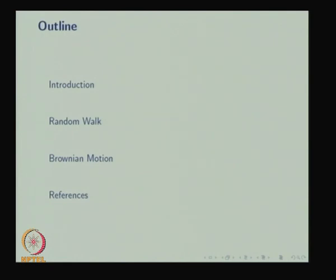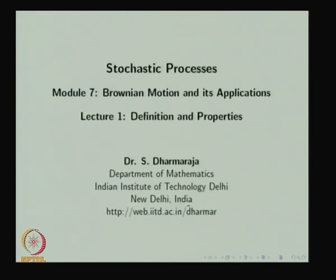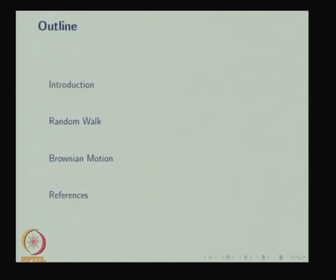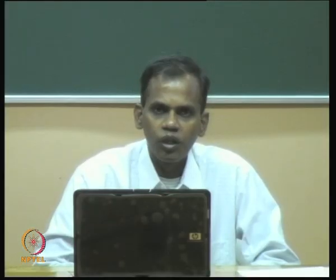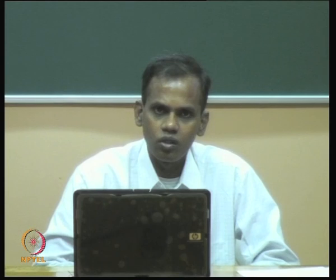This is lecture one of module seven: Brownian Motion and Its Application. In this lecture we are going to discuss the random walk and the definition of Brownian motion, how one can derive Brownian motion using a random walk, and some important properties of Brownian motion.